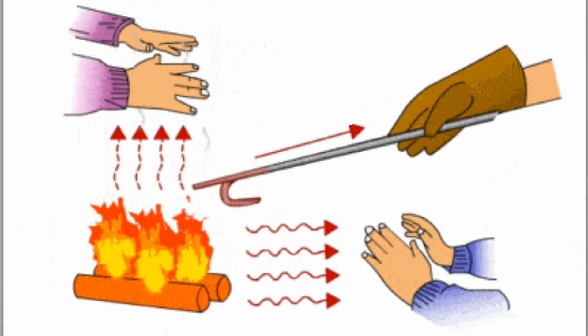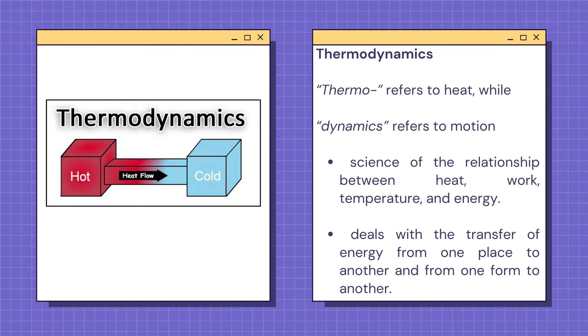Thermodynamics is the science that studies the relationship between heat, work, temperature, and energy. It deals with the transfer of energy from one place to another and from one form to another. Thermodynamics comes from the word thermo, which means heat, and dynamics, which means motion.